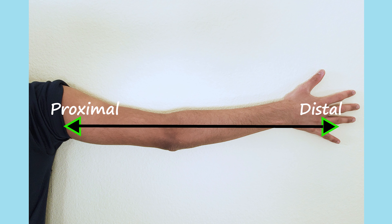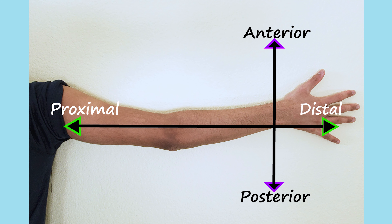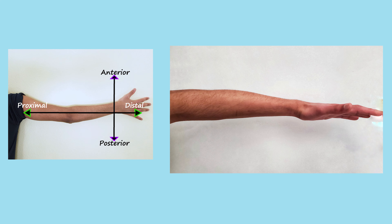These three axes are known as proximal-distal, which is shoulder to finger; anterior-posterior, which is thumb to pinky; and dorsal-ventral, which is outer to inner arm.